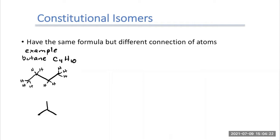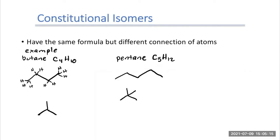Let's try pentane — we just add one carbon, so it's C5H12. Again, try to draw as many isomers as you can and pause the video. Hopefully everyone got the first one: the straight-chain drawing. Maybe you copied the branched structure from butane and just added that extra carbon in the middle. Or maybe you came up with a new type of structure. With more carbons and hydrogens, we can get more structures and more different connections.